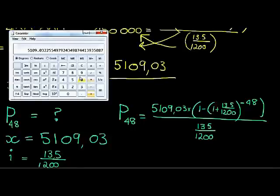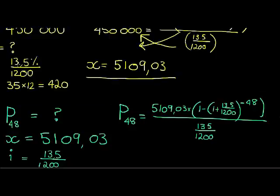And now if we go calculate, that is 5,109.03 times in a bracket 1 minus another bracket (1 plus 13.5 divided by 1200) close the bracket, to the power of the critical step 48 with a negative, close that, and divide with this bracket 13.5 divided by 1200. And that gives me an answer of, there we go, 188,698 is still remaining. 188,689, okay, that's how much I'm still owing. 188,689 and 95 cents.